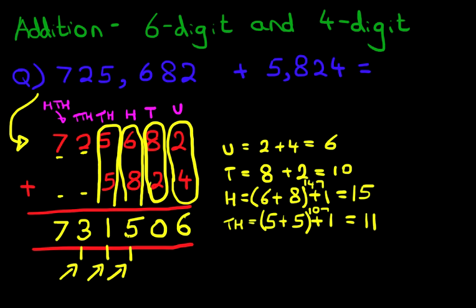And we have got our answer. So let's write this down. It's 731,506. And that is correct. So that is how we do the addition of a 6-digit and a 4-digit number using the vertical format.